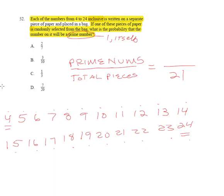So if you look at the numbers down below, you can see that 5 is prime, 7 is prime, 11 is prime, 13 is prime, 17 is prime, 19 is prime, and 23 is prime.